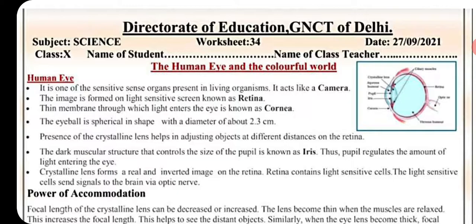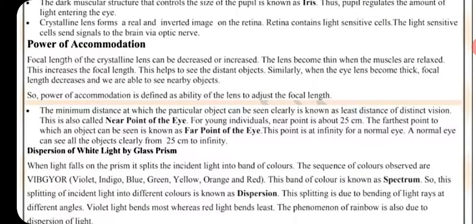The crystalline lens forms a real and inverted image on the retina. The retina contains light-sensitive cells which send signals to the brain via the optic nerve. These light-sensitive cells include rods and cones.